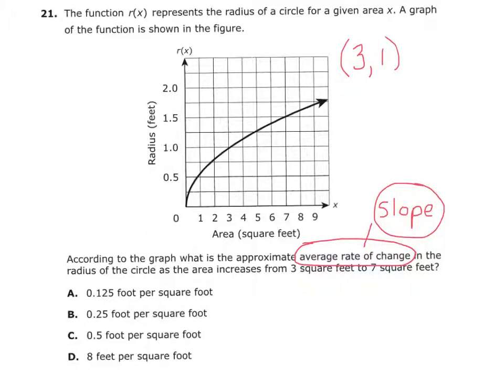And then let's look at the other point. The other point is 7 and what? 1.5. So let's write that point, 7, 1.5.